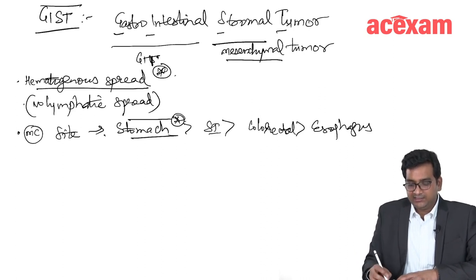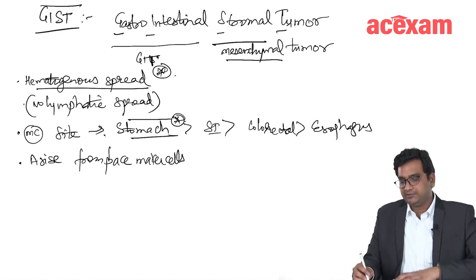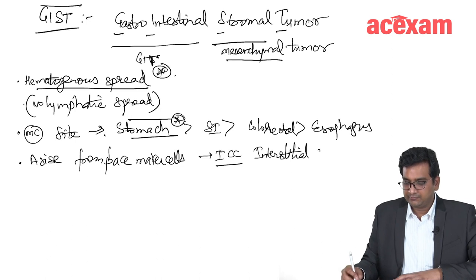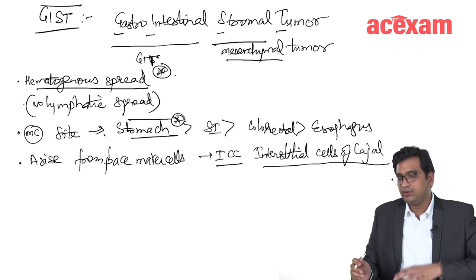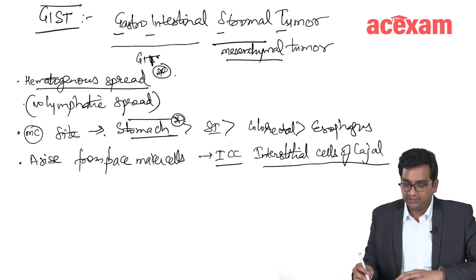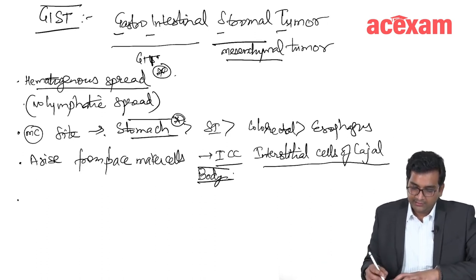GIST arises from pacemaker cells. The other name for pacemaker cells is interstitial cells of Cajal. The most common location where these interstitial cells of Cajal are identified is the gastric body. In the stomach, the most common site to identify GIST is the gastric body.